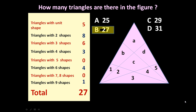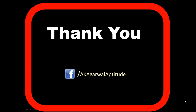Let us count all these — it comes to 27. So the answer is 27. From the given shape, total 27 triangles can be formed. This technique can be used from unit to full shape for counting the number of triangles or any shape in any given figure. Friends, thank you very much.